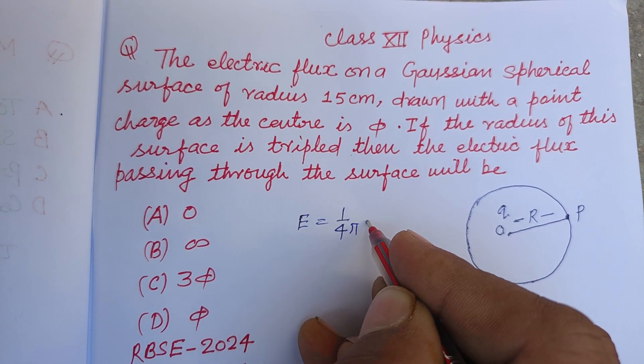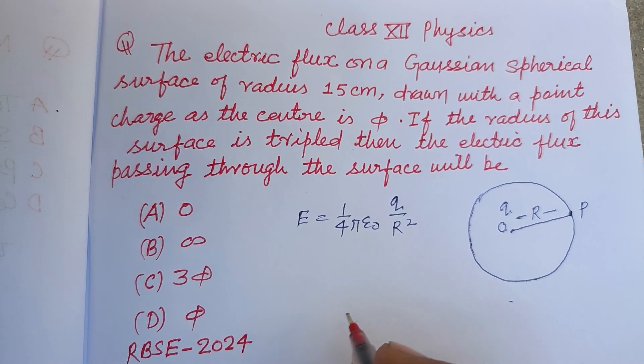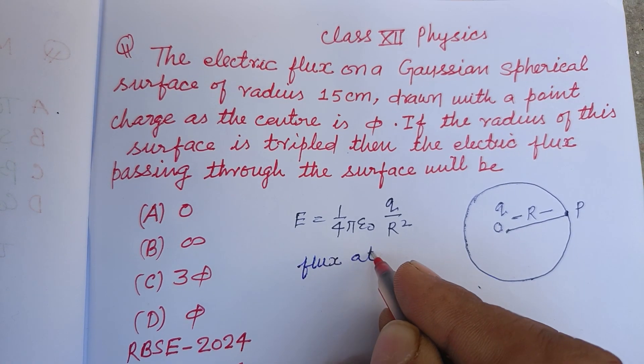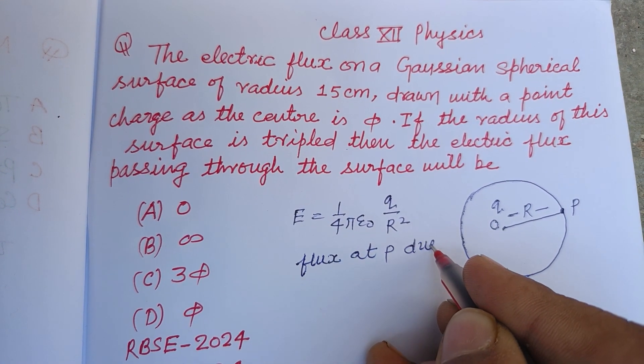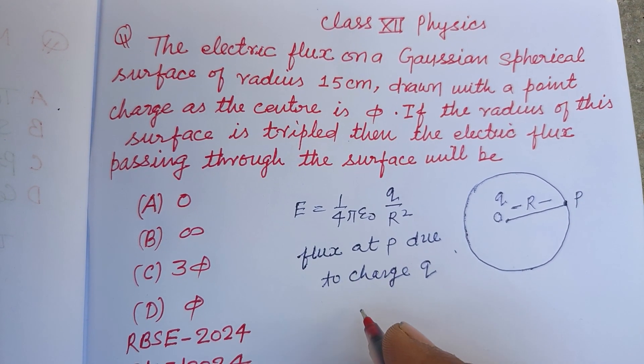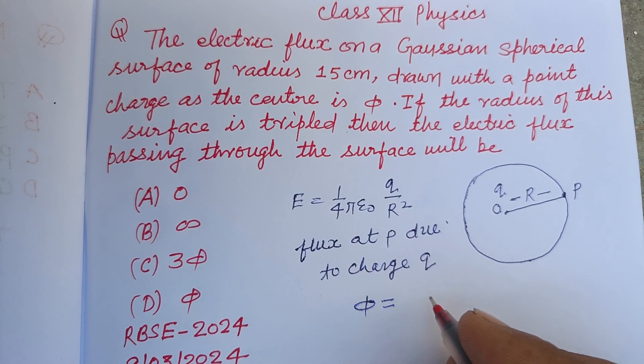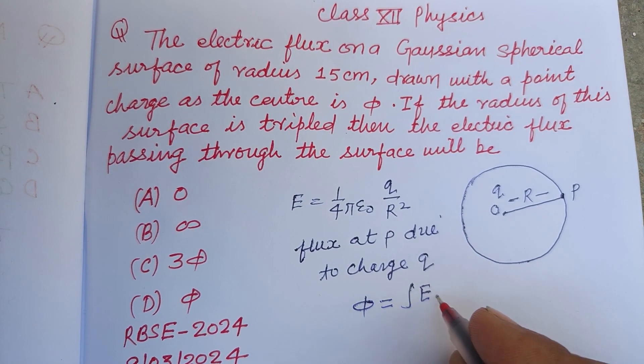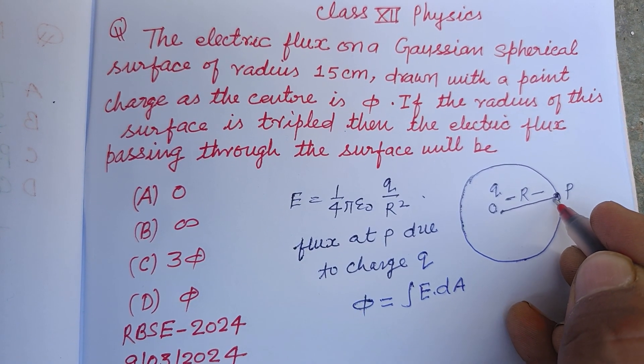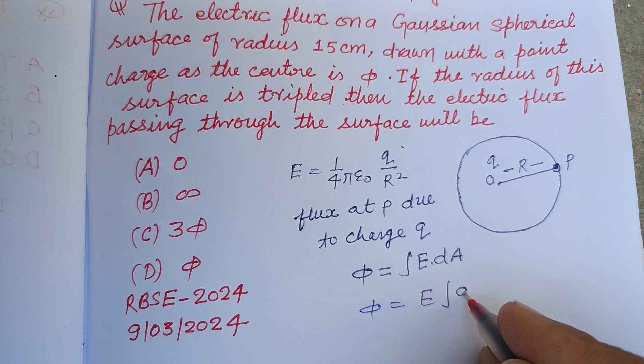And flux at P due to charge Q - this is by using Gauss's theorem. E into dA, where dA is the area of a small element taken here at P. So φ = E × ∫dA.